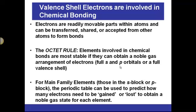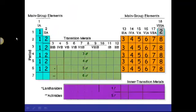For main family elements, those in our s block or p block, the periodic table can be used to predict how many electrons need to be gained or lost to obtain the noble gas state for each element. We touched on this at the end of chapter two.